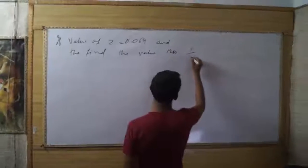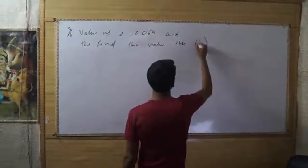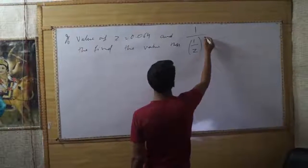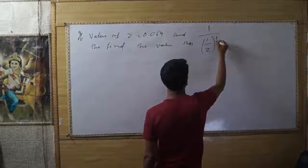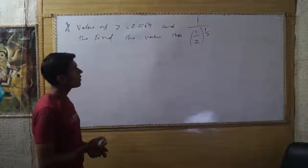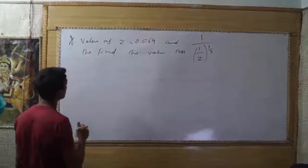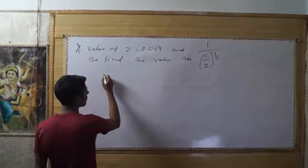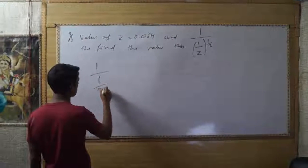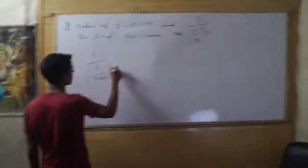We need to find 1 divided by z, raised to the power of 1 divided by 3. So we are taking 1 divided by z where z's value is 0.064, and the exponent is 1 divided by 3.